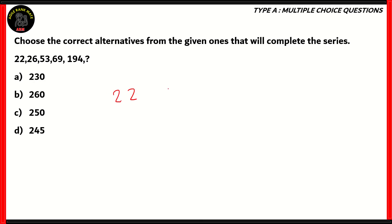Now for that, we need to understand the series here. If you look at the series, you have 22, 26, 53, 69, and 194. So the difference between 22 and 26 is easy. It's a difference of 4. If you look at the difference between 53 and 26, it's a difference of 27.